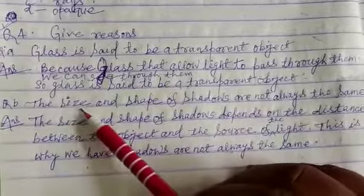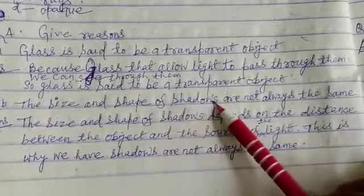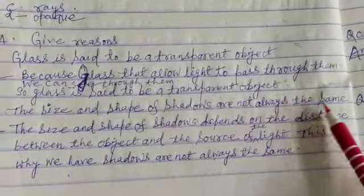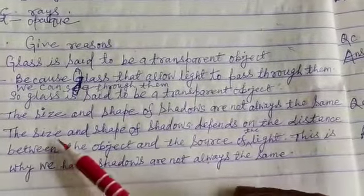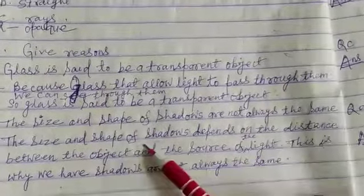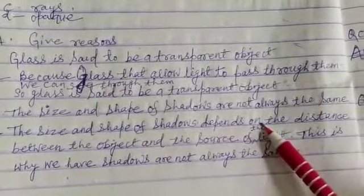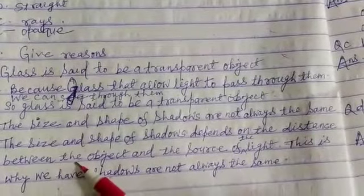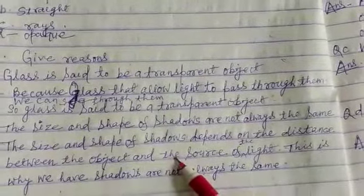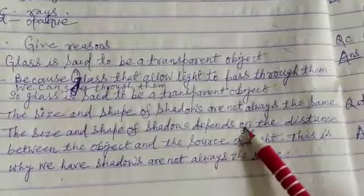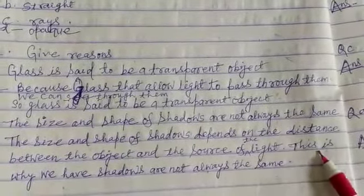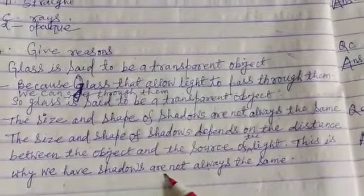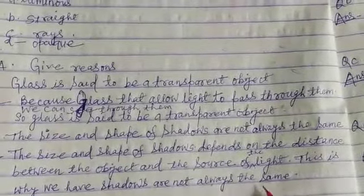Question B. The size and shape of shadows are not always the same. The size and shape of shadows depend on the distance between the object and the source of light. This is why shadows are not always the same.